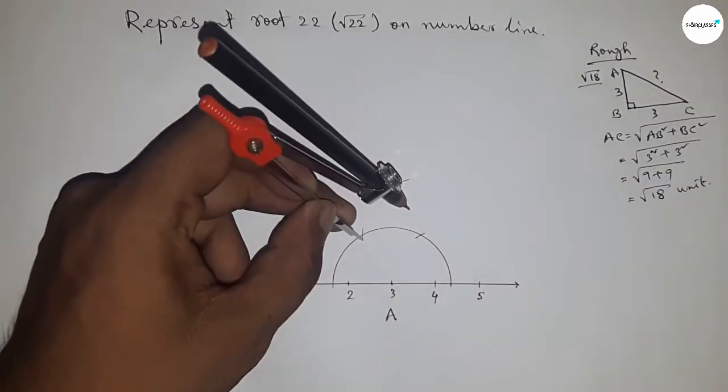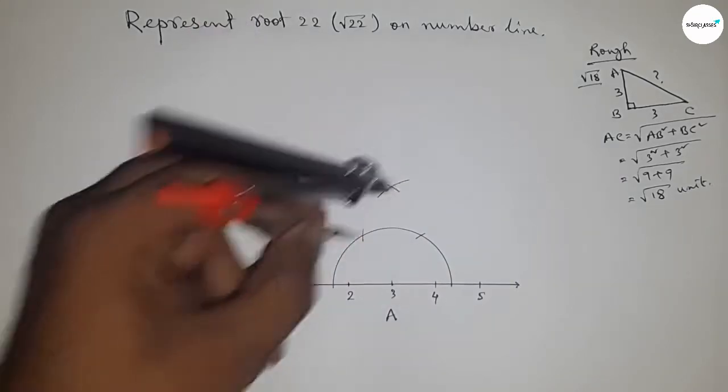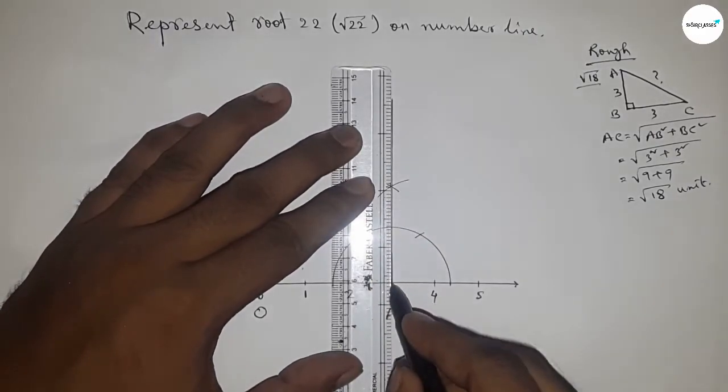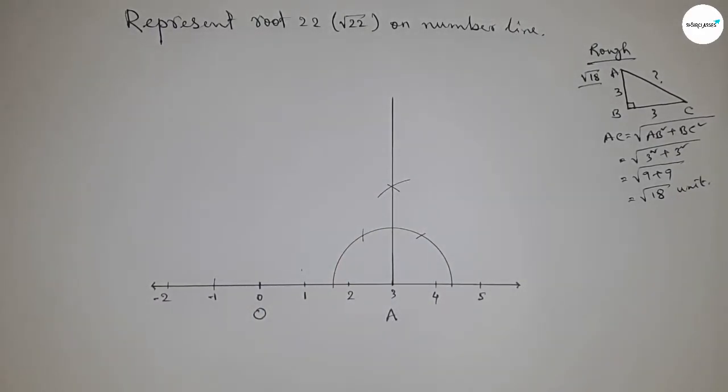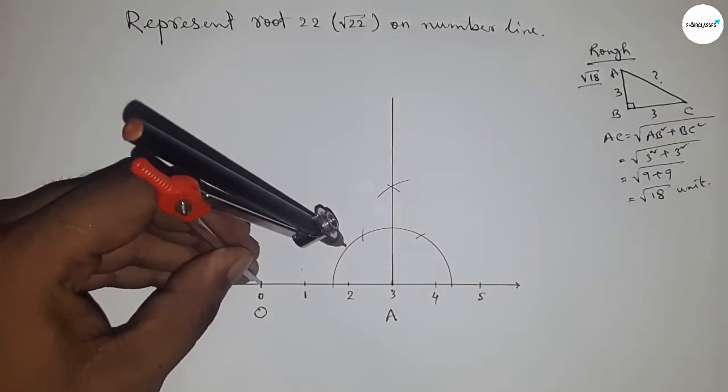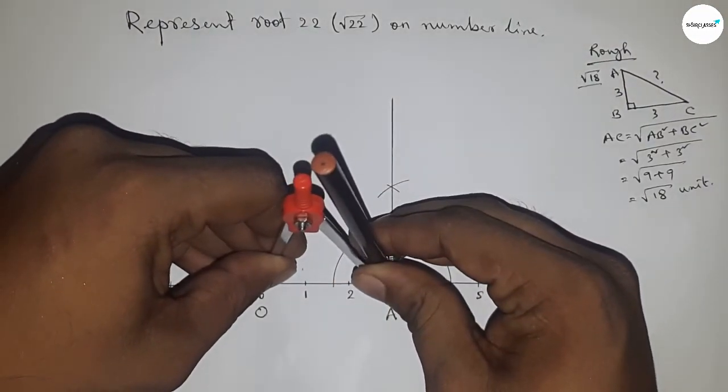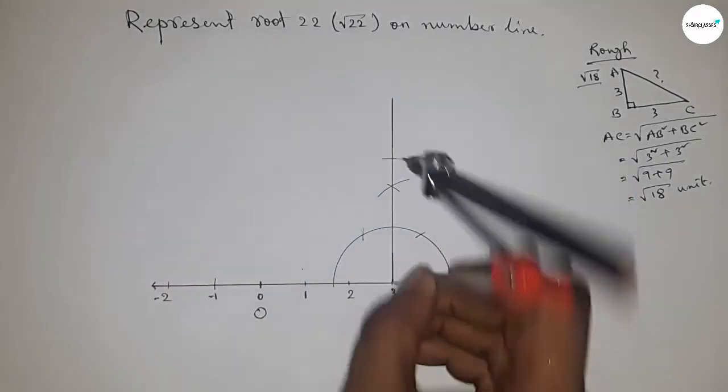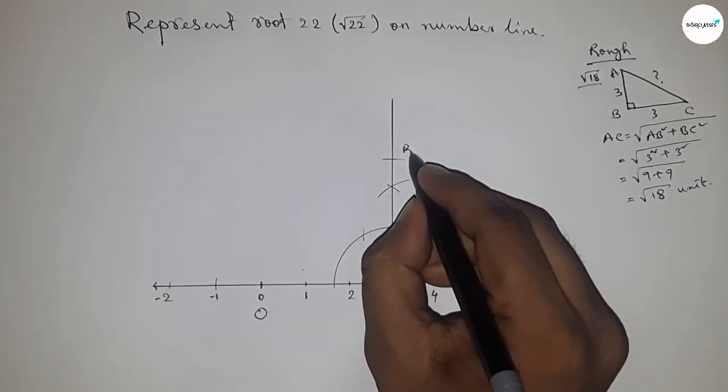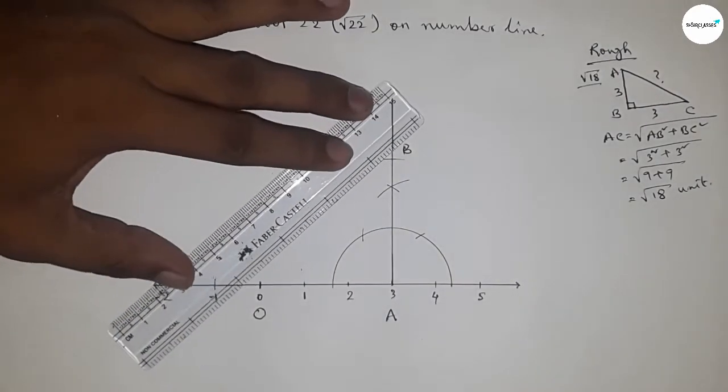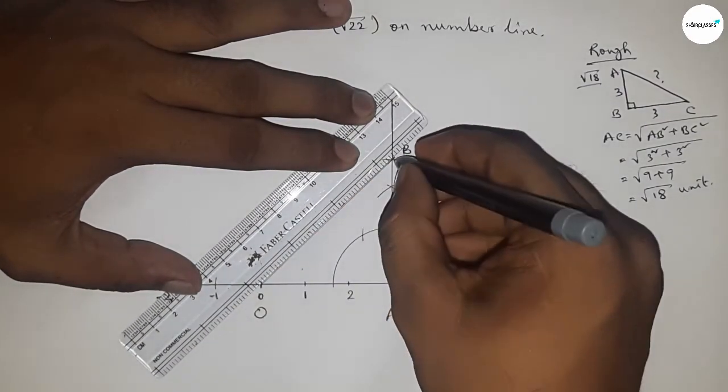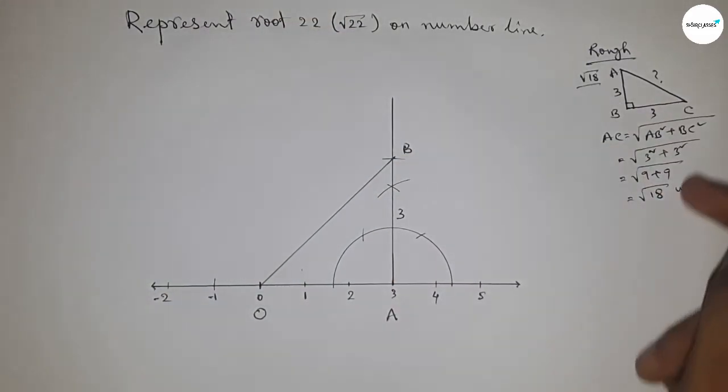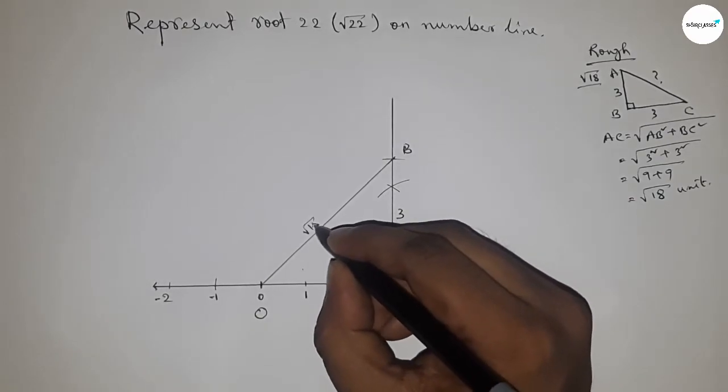And drawing arc here with same length and cut here. Now joining this. Now taking length between O and A because this is 3 unit length. So this is B point. Now joining O and B, and this is 3 unit length. From this we can say that OB equal to root 18 unit.